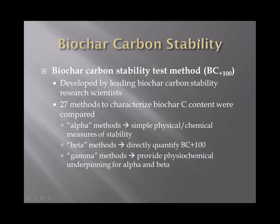The expert panel reviewed 27 available test methods and categorized them into three groups. The first are alpha methods — methods which can reliably estimate BC+100 at minimal cost with readily available technologies. The second are beta methods, used to calibrate alpha methods and directly quantify BC+100; they tend to be more costly and less commercially available. The third are gamma methods, which provide the physical chemical underpinning for the alpha and beta methods. The alpha method is what is utilized in the actual methodology to determine stable carbon.